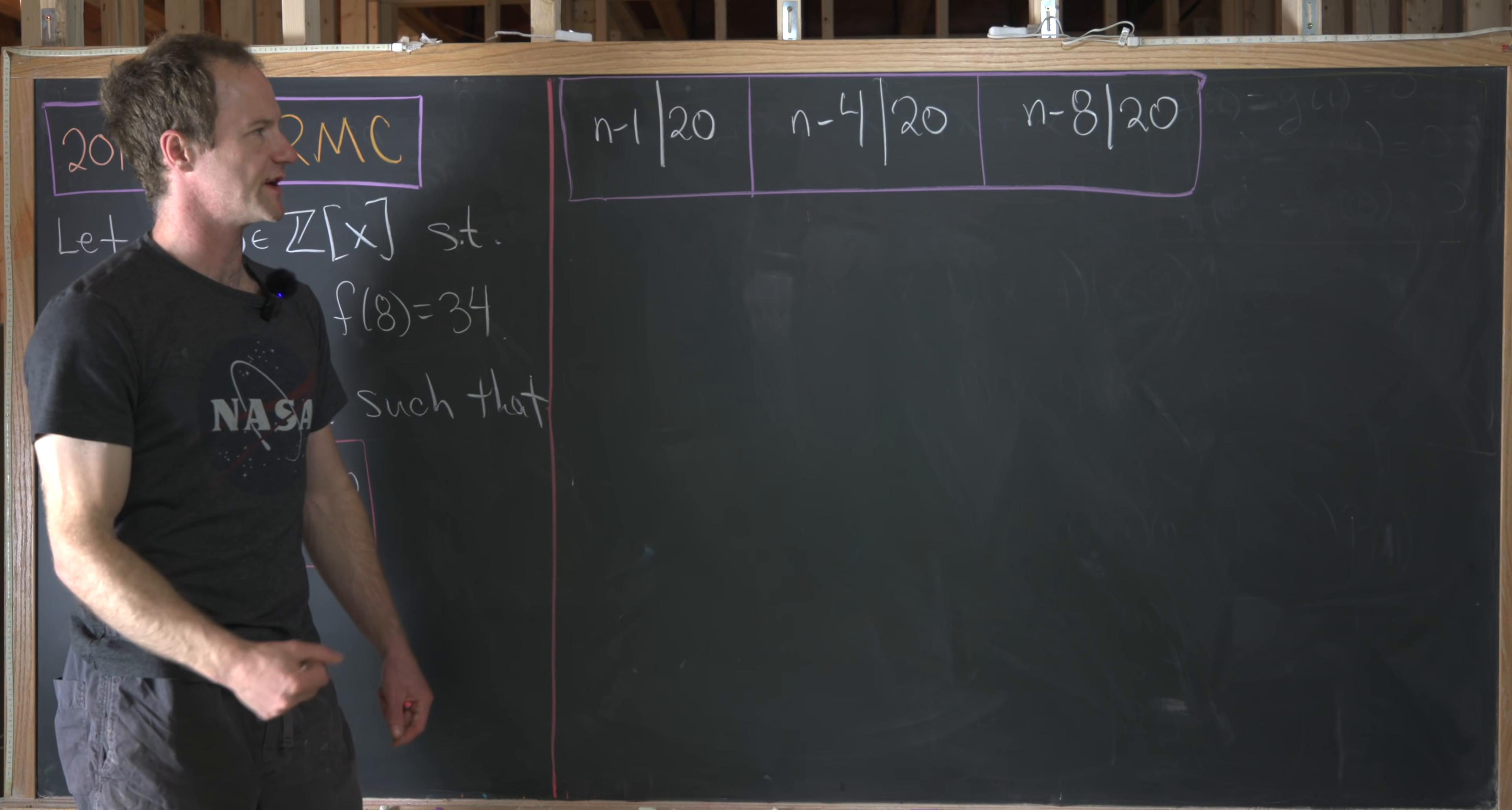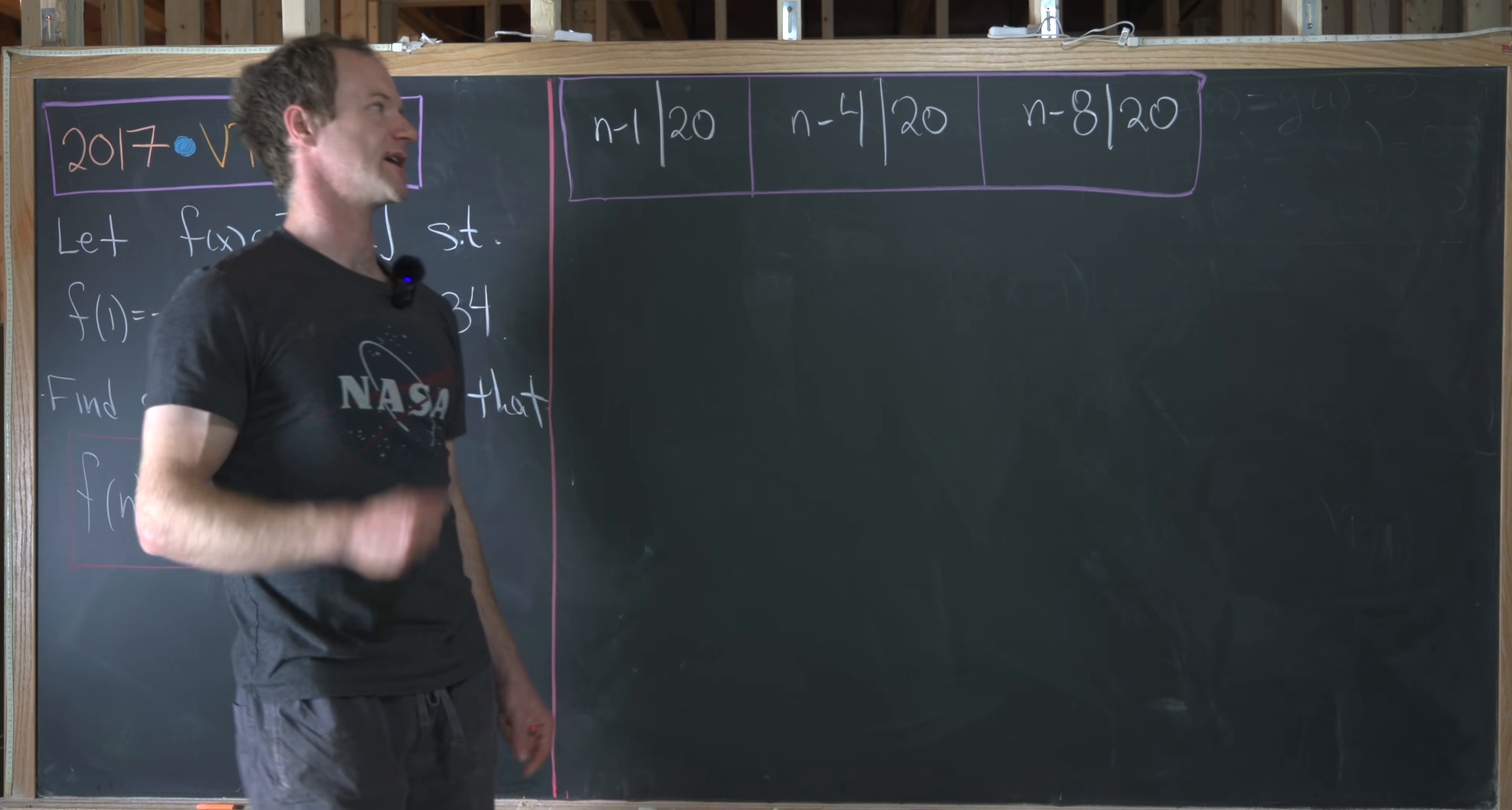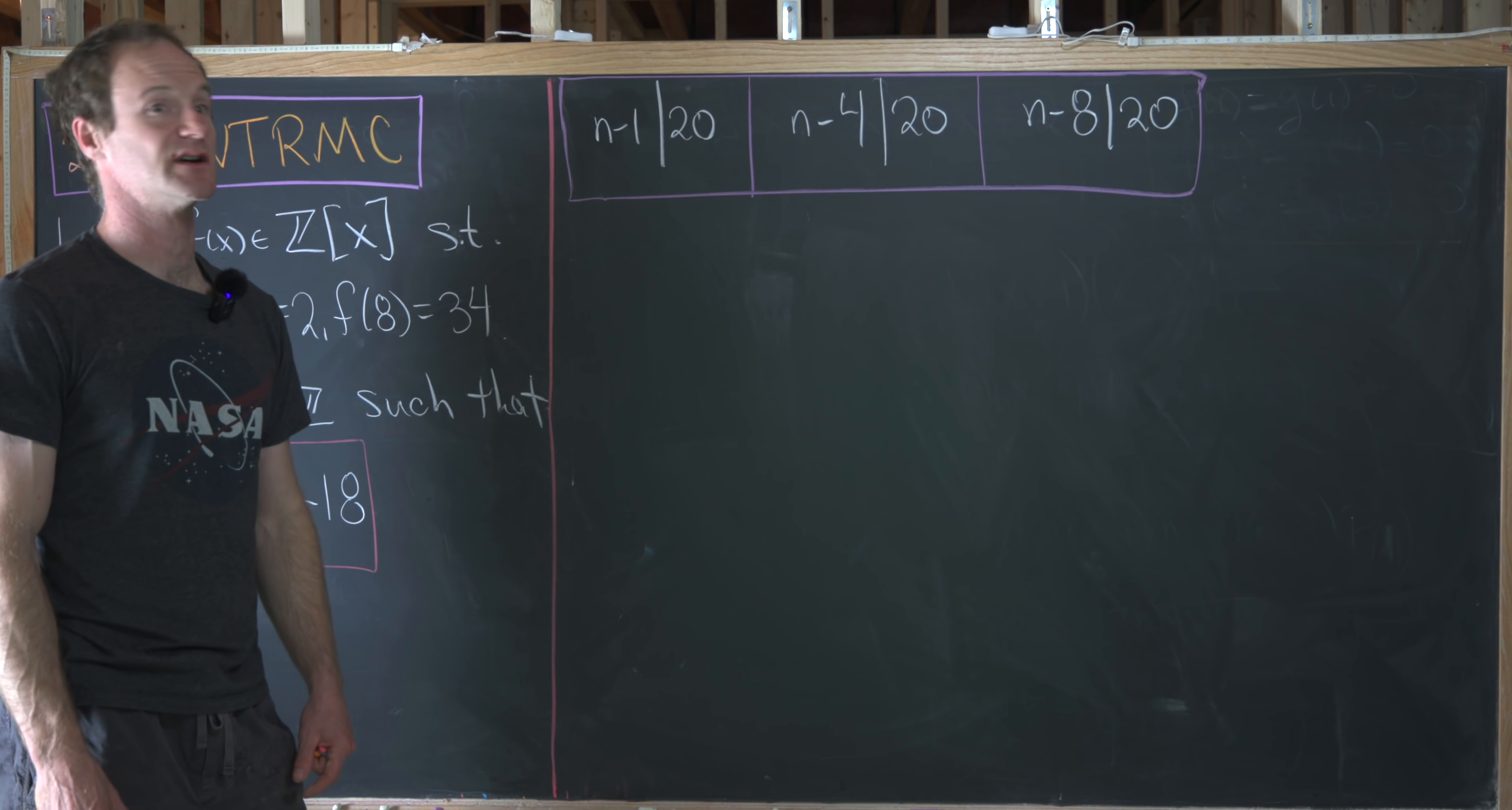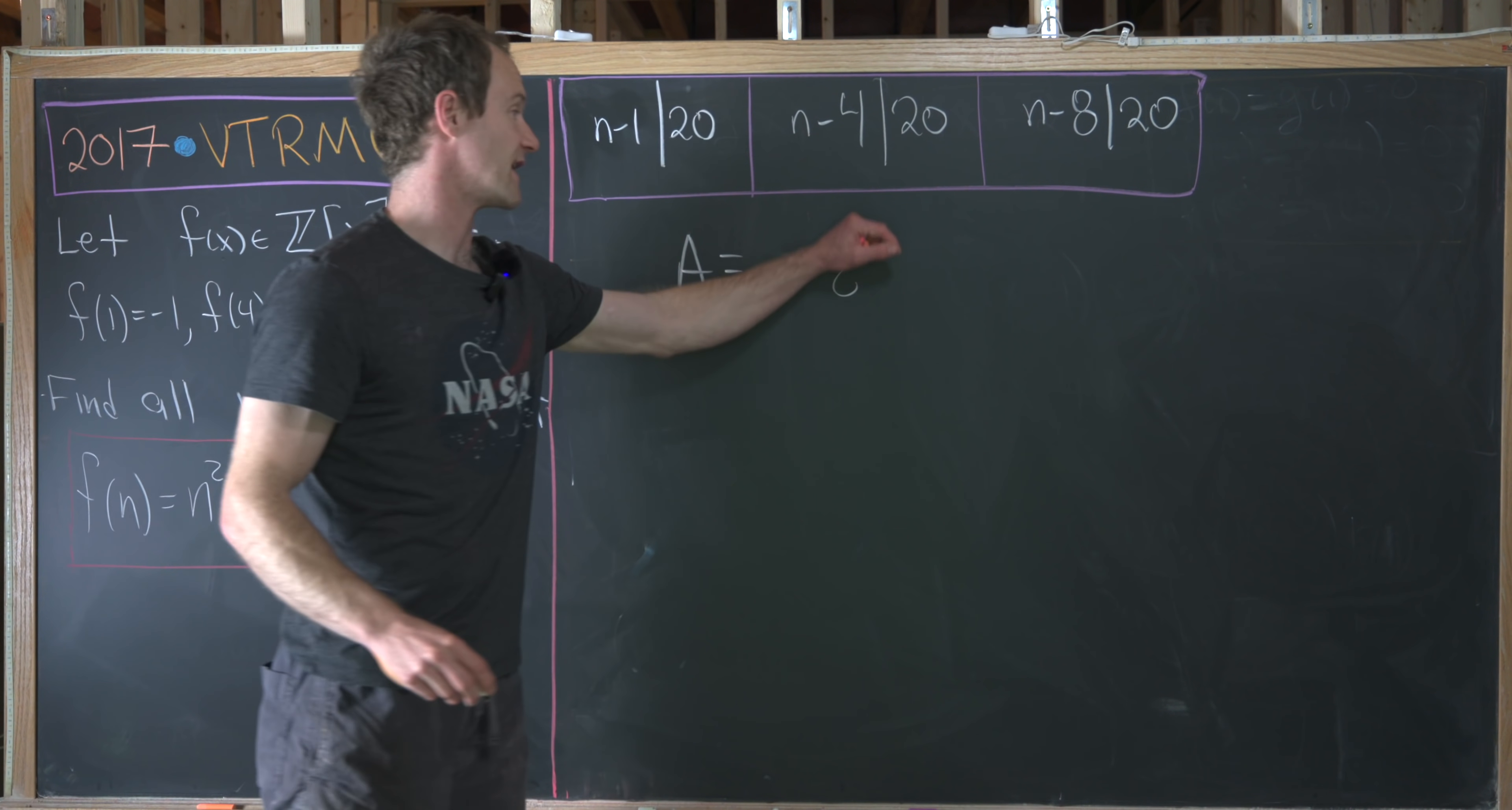On the last board, we determined that the n values that we're going for to solve this question satisfy the following three conditions: n minus 1 is a divisor of 20, n minus 4 is a divisor of 20, and n minus 8 is a divisor of 20. So keeping that in mind, we probably want to make a list of all of the divisors of 20. So that's pretty easy to do. We can look at the divisors of 20. Maybe we'll call that A. So this is going to be the set of all divisors of 20.